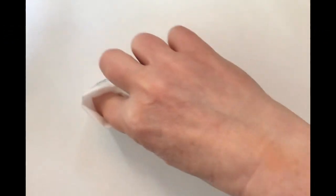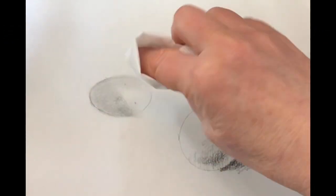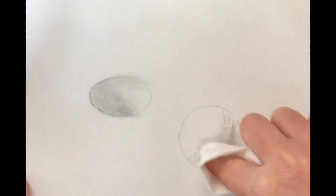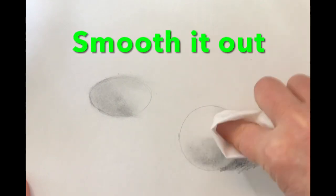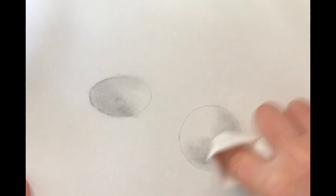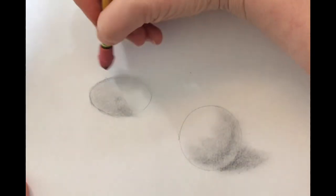Take a tissue and I wrap it around my finger very carefully, and then I just kind of lightly twirl this around. Smooth it out. If you have a blending stump, go ahead and use that. I just used a tissue.